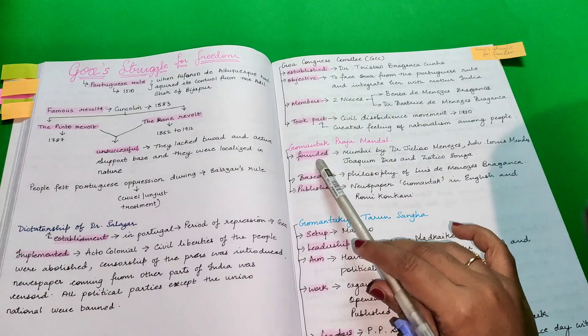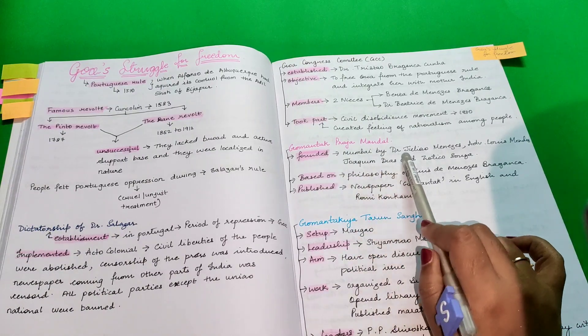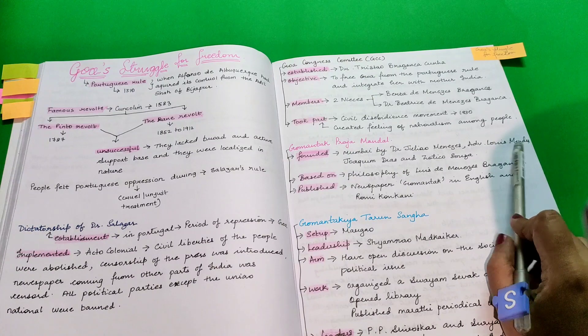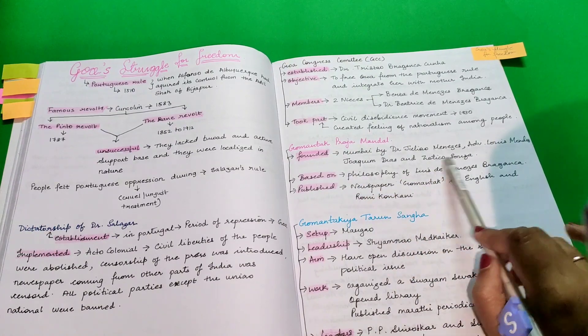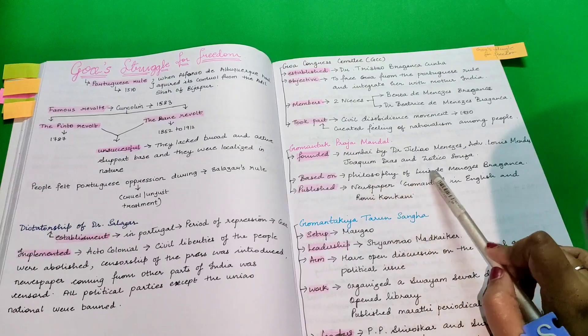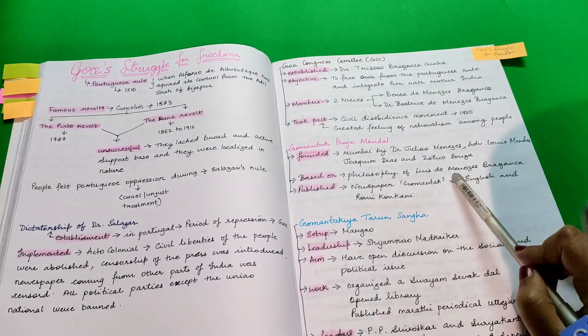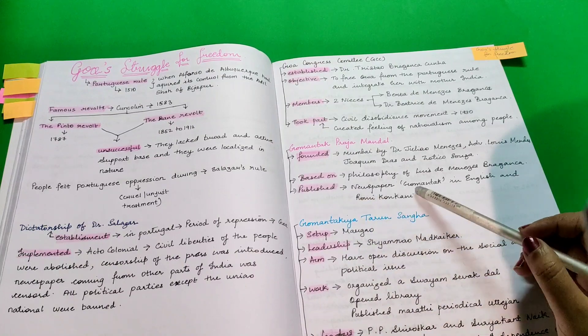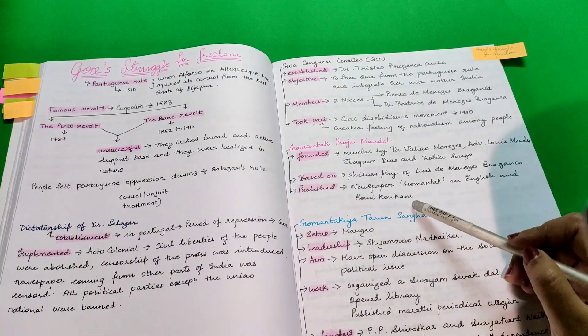Goa Mantak Praja Mandel was founded in Mumbai by Dr. Julio Menezes, advocate Luis Mendez, Joaquin Dias and Zotico Souza. It was based on the philosophy of Dr. Louis de Menezes Braganza and they published newspaper Goa Mantak in English and Romi Konkani.